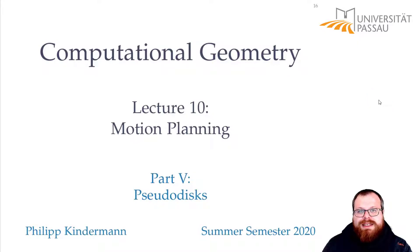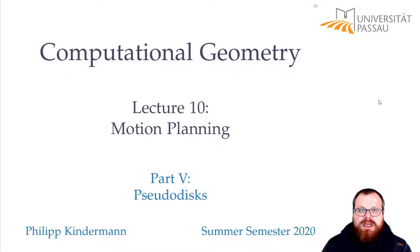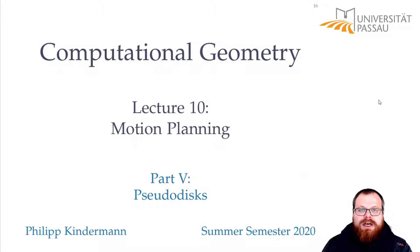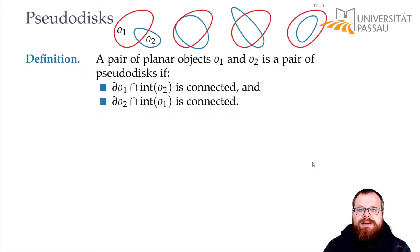We know the complexity of the Minkowski sum between our inverted robot and a single obstacle. But to compute the free space, we have to take the union of all these configuration polygons and figure out why the union of these is not too large. For that, we need the concept of pseudodisks.